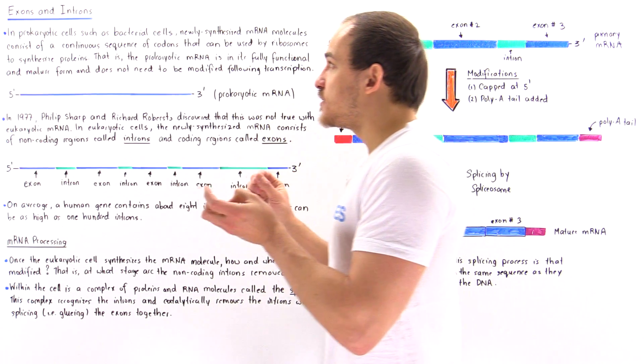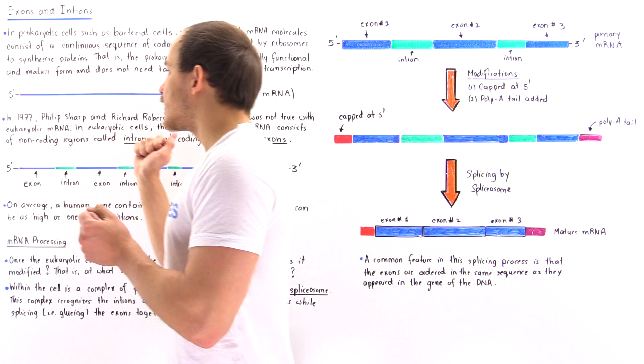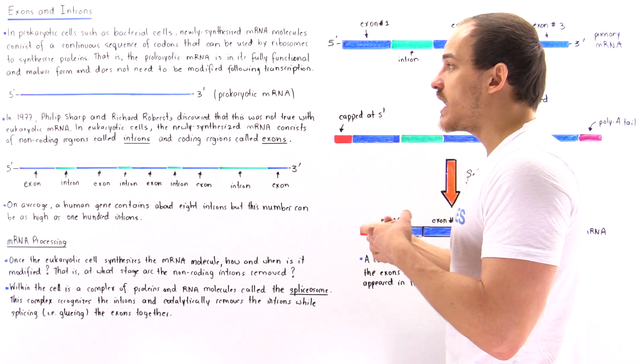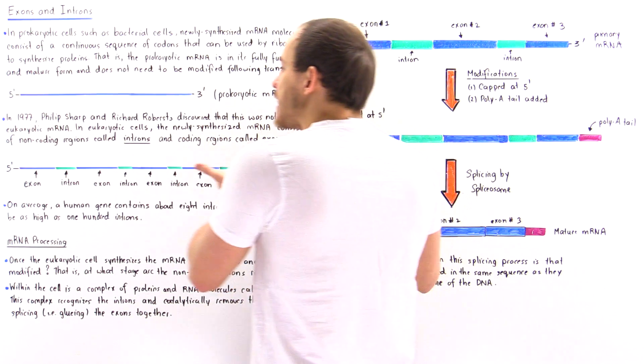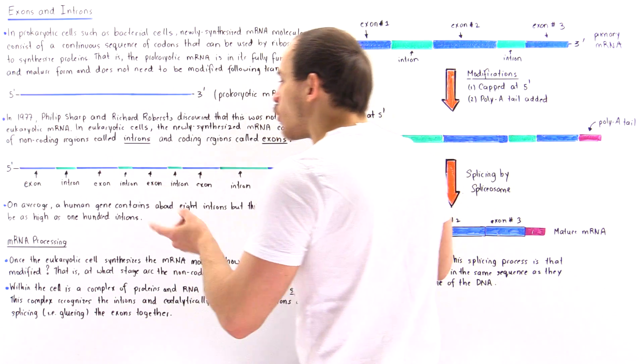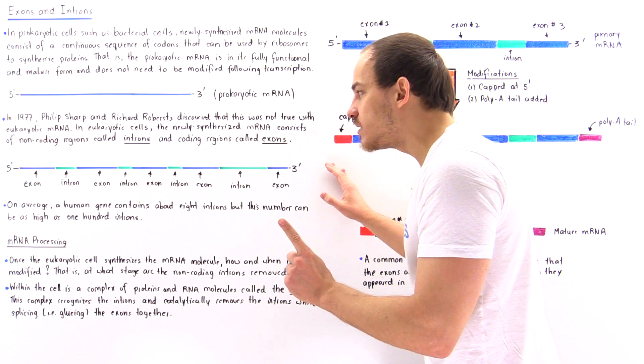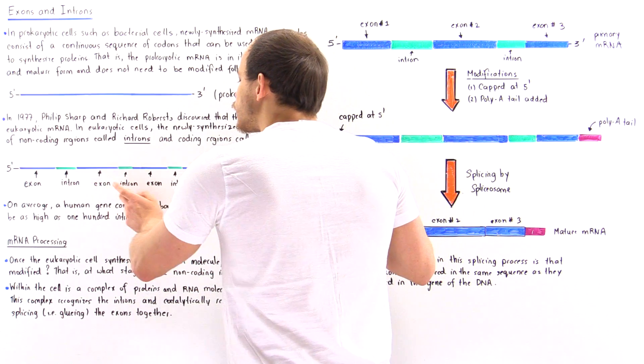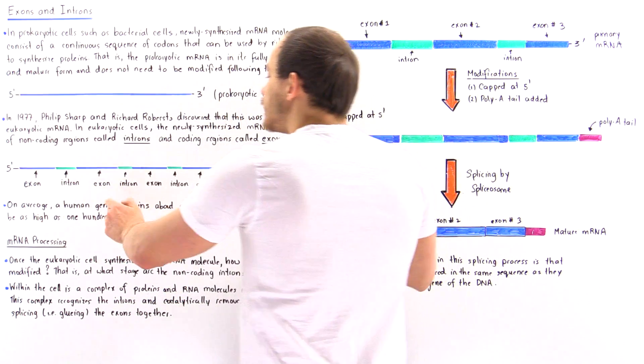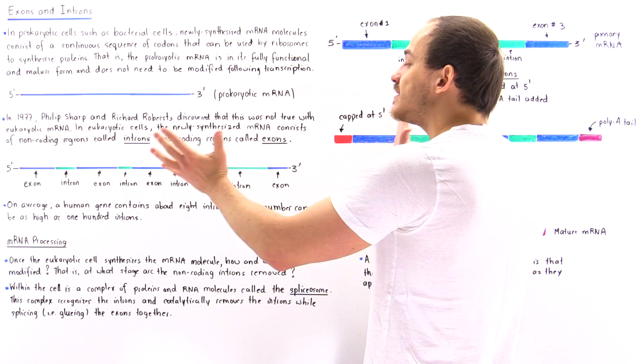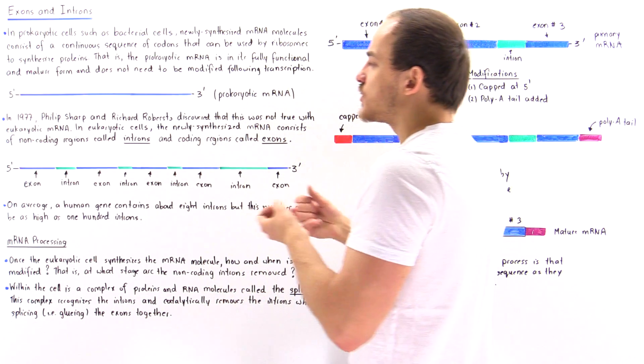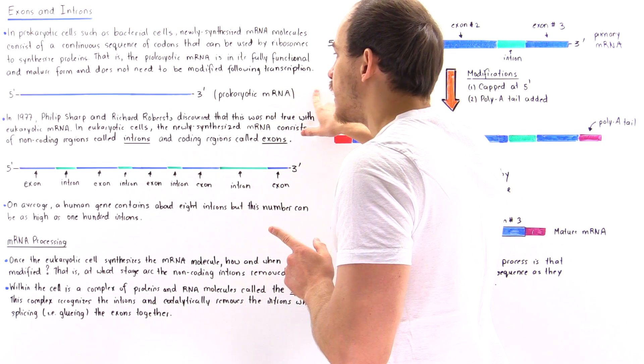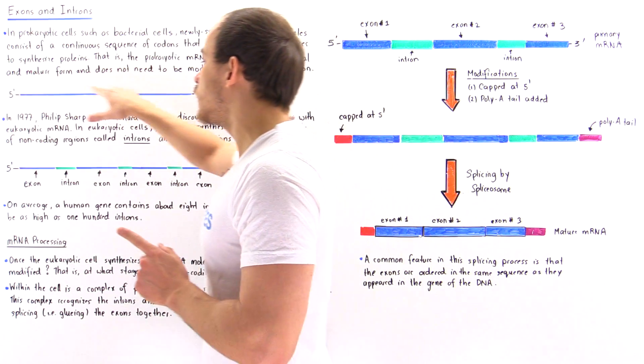So the major difference between these prokaryotic cells and eukaryotic cells is that our eukaryotic mRNA, once it is synthesized, it contains these introns. And therefore, it cannot be used directly to synthesize the proteins. It has to be modified. And these introns have to be removed, while the exons have to be glued, spliced together before that ribosome can actually synthesize the protein. And this is not true in prokaryotic cells because they don't contain the introns.